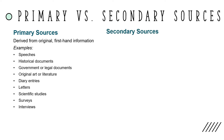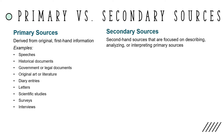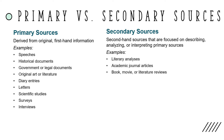Secondary sources, on the other hand, are second-hand sources that are focused on describing, analyzing, or interpreting primary sources. Some examples are literary analyses, academic journal articles, and book, movie, or literature reviews.